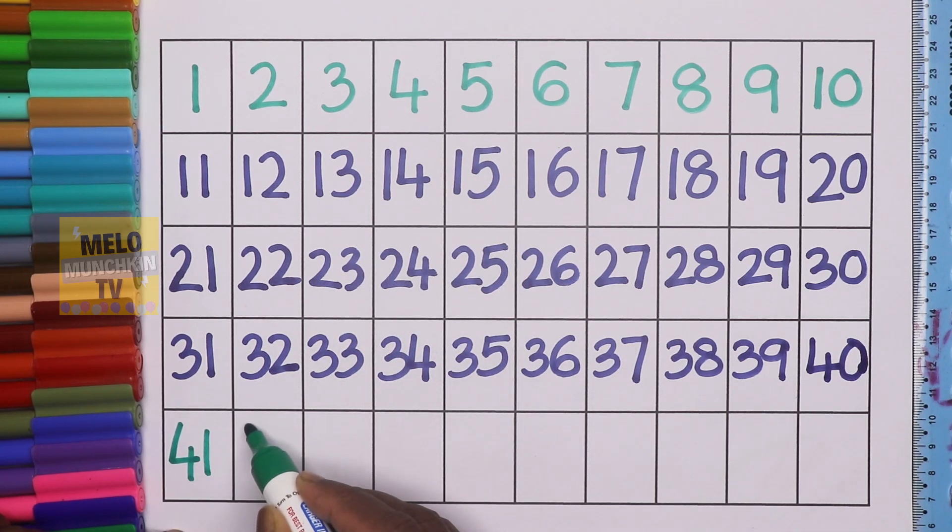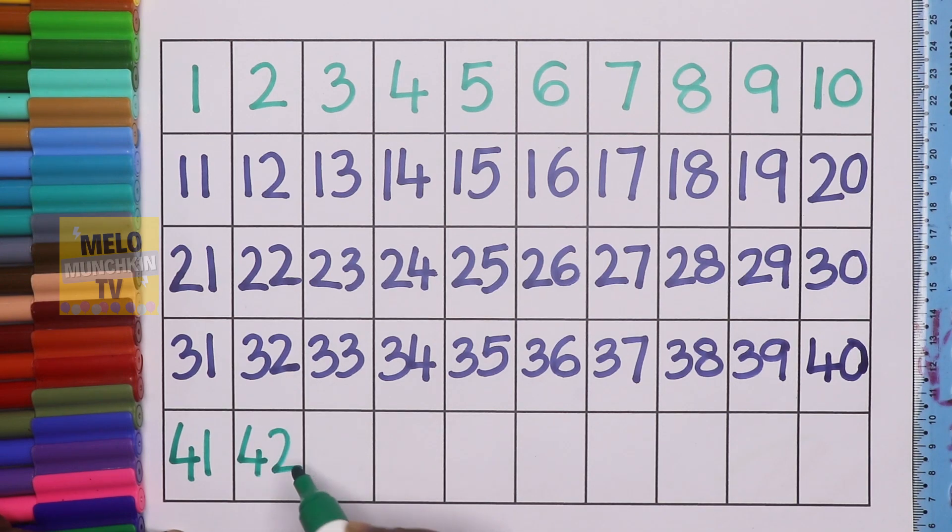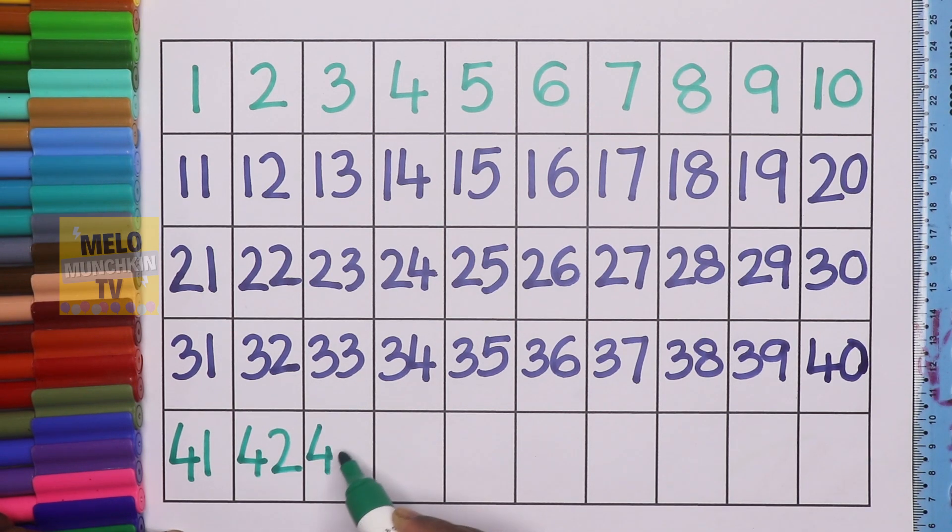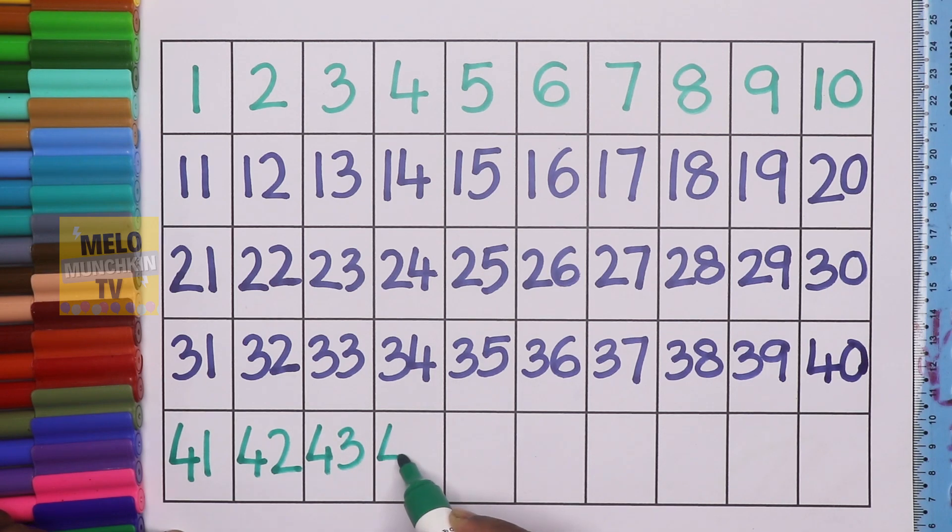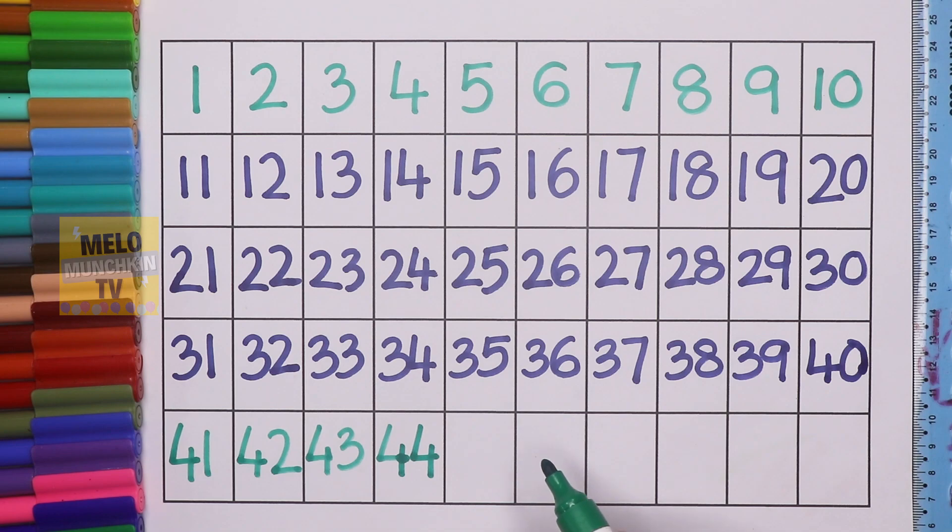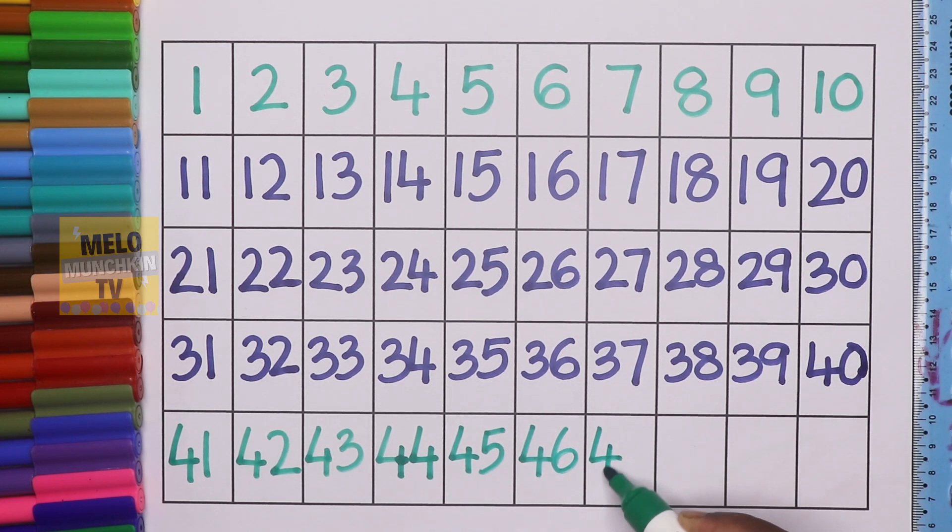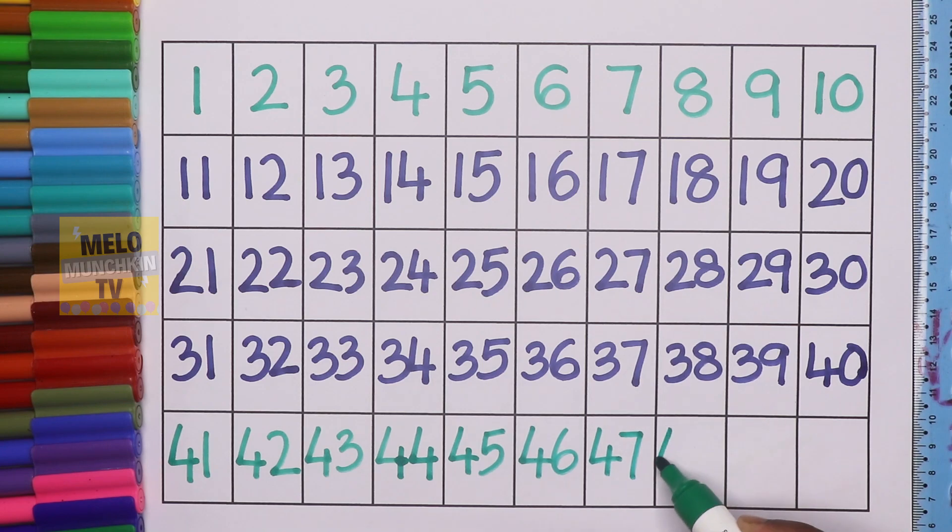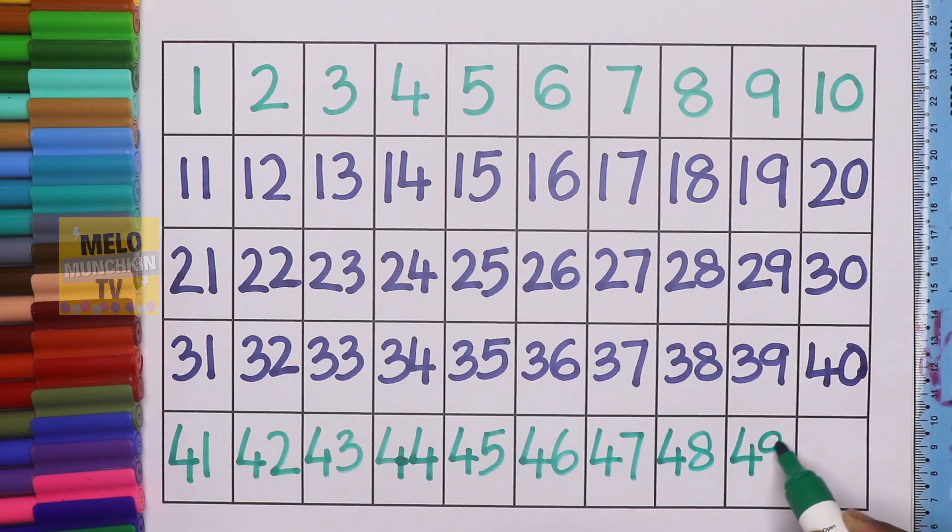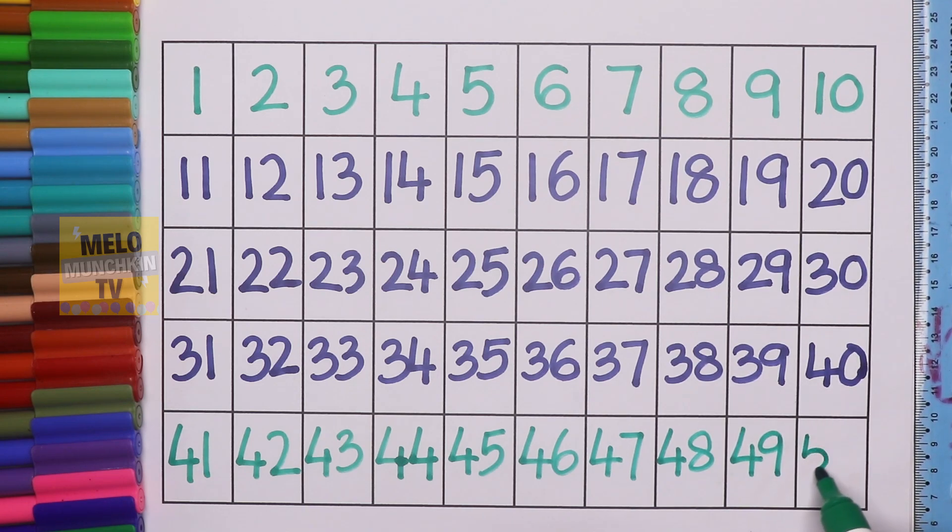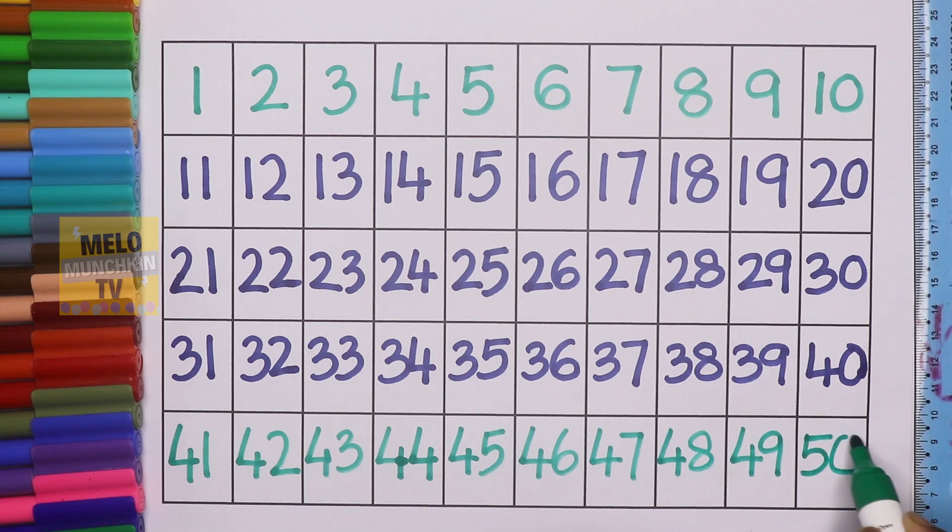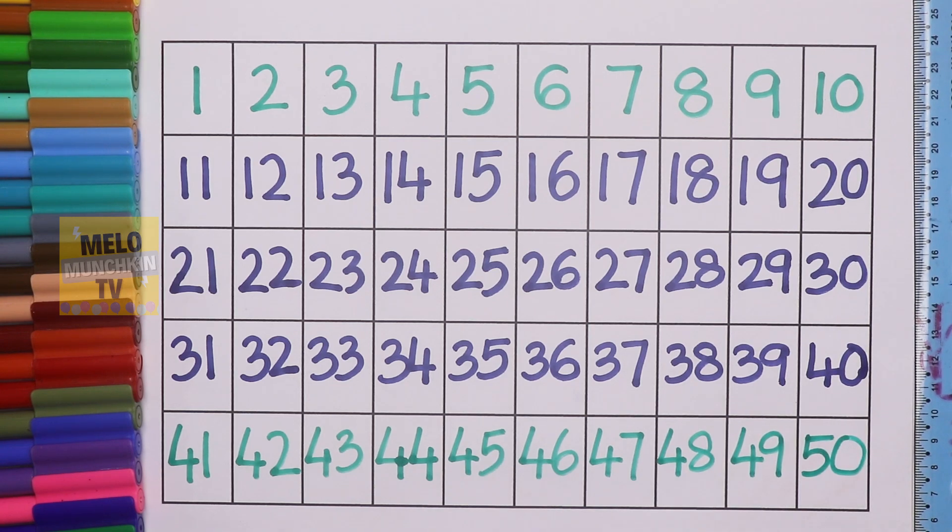41, 42, 43, 44, 45, 46, 47, 48, 49, and finally 50. So hence we have completed our numbers from 1 to 50. I hope you have learned something from this video kids.